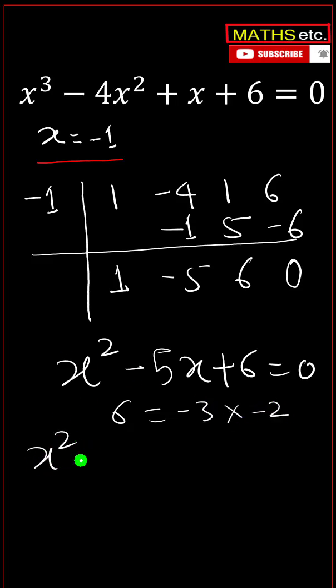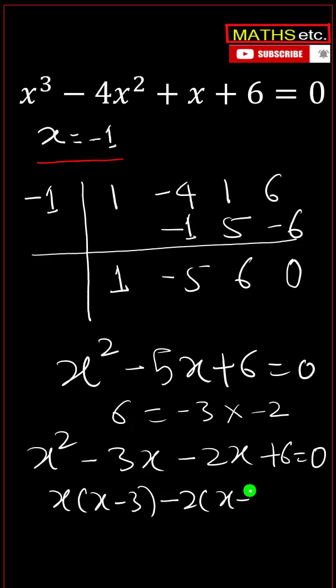6 can be factorized as minus 3 multiplied by minus 2. So we get x square minus 3x minus 2x plus 6 equals to 0. This comes out to be x times x minus 3, minus 2 times x minus 3 equals to 0. So we get x minus 3 times x minus 2 equals to 0.